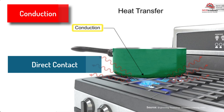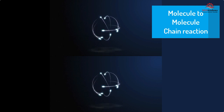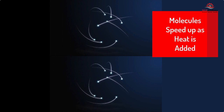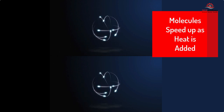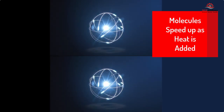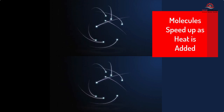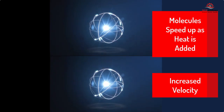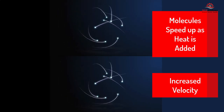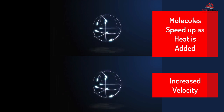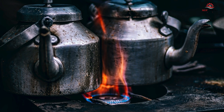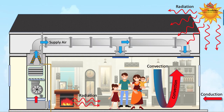Conduction occurs when heat is passed from one molecule to another in a chain reaction through an object. When heat is added to an object, its molecules speed up as does its temperature. These heated molecules bump into the adjacent molecules, causing their velocity to decrease and to heat up. This chain reaction keeps occurring as long as heat is added or as long as there is an imbalance between molecules. This is most notable when heat is applied to a metal object that you come into contact with.